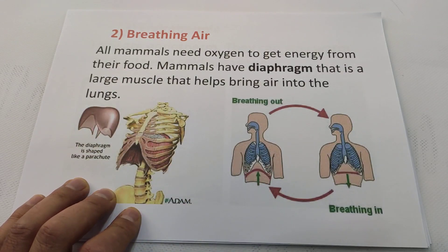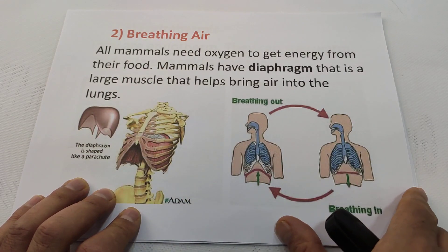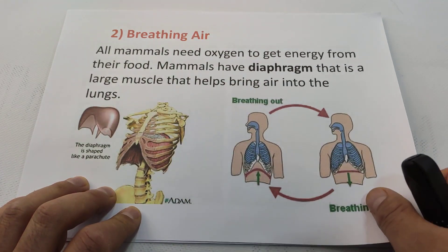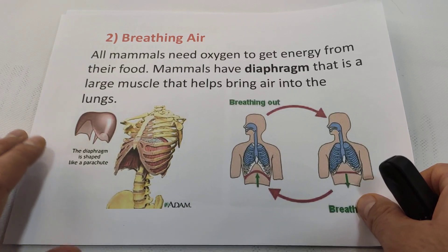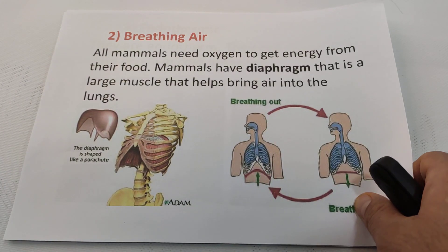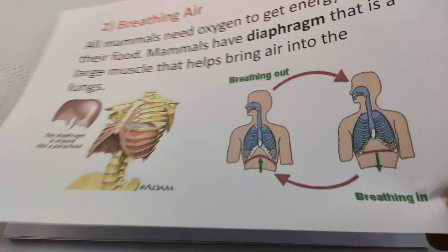Mammals have a diaphragm — a large muscle that brings air into the lungs. Our respiratory organ is the lung. What about other animals? For example, fish respiratory organ is the gill.